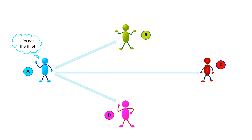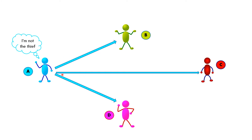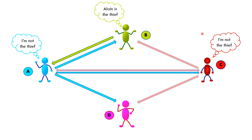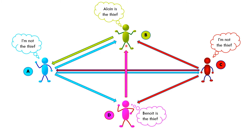Alain's statement is 'I'm not the thief,' so we can assume Alain is accusing all other suspects except himself. We draw arrows pointing to all other suspects. Binwa said Alain is the thief, so we draw an arrow pointing to Alain. Charlie also said 'I'm not the thief,' so the arrows point to all other suspects other than himself. Dominic said Binwa is the thief, so the arrow points directly to Binwa.